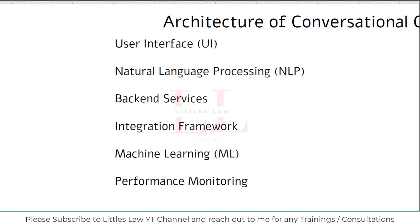Machine learning allows the chatbot to become more intelligent and effective, enhancing user satisfaction with more accurate and contextually relevant interactions. Finally, performance monitoring refers to the tools and processes used to track and analyze chatbot performance. Key metrics include response times — measuring how quickly the chatbot responds to user inputs — and error rate — tracking the frequency of issues or failures in processing requests.